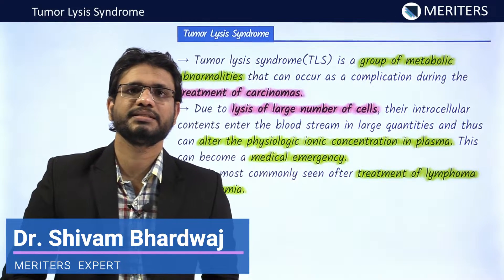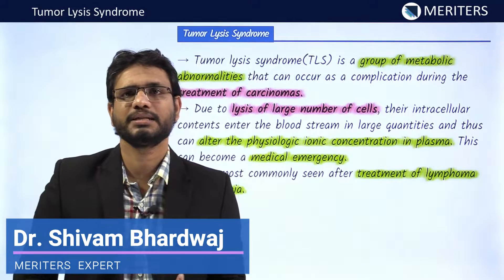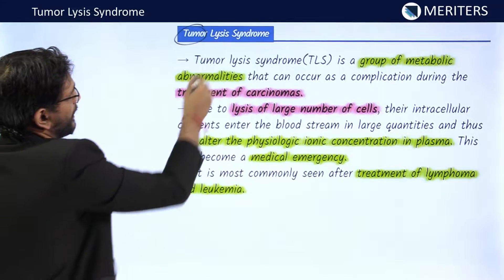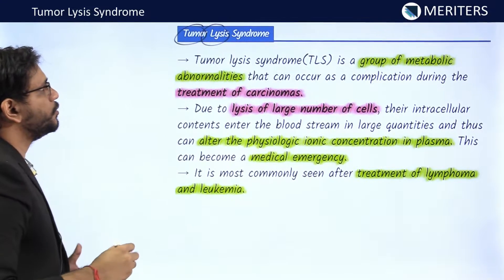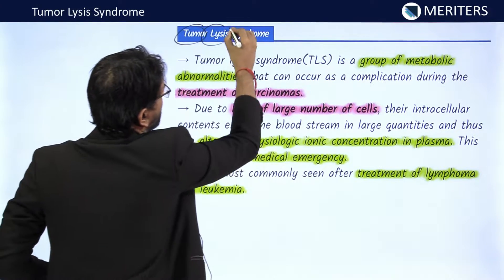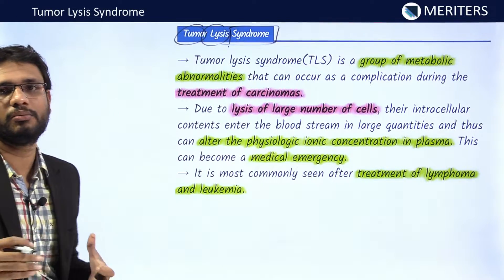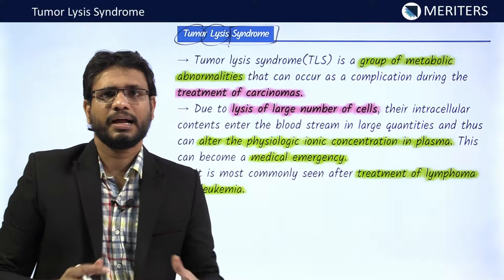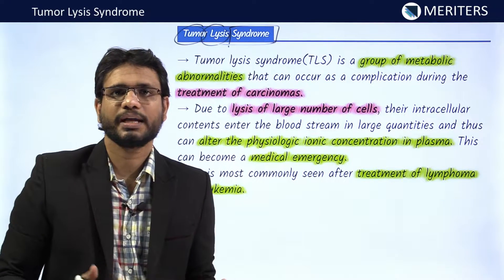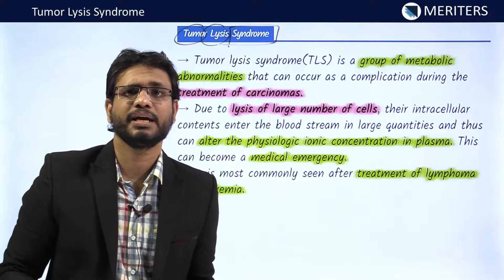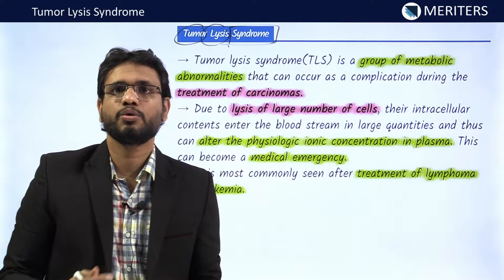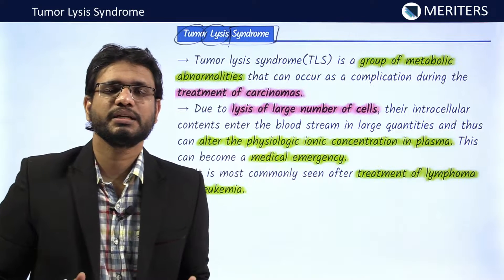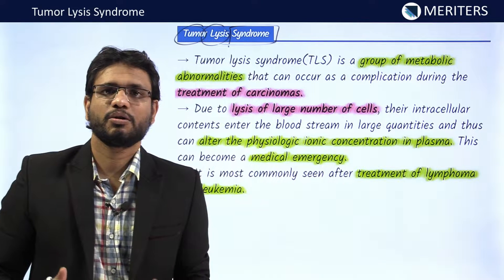Hello everyone. In this video, we'll be discussing tumor lysis syndrome. As the name indicates, tumor cells have been lysed, leading to a number of abnormalities that collectively form the syndrome. The tumor is most commonly of hematological origin — that can be leukemia, lymphoma, or high-grade non-Hodgkin's lymphoma, in particular Burkitt's lymphoma. These are the tumors in which tumor lysis syndrome is most specifically seen.